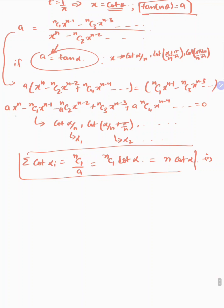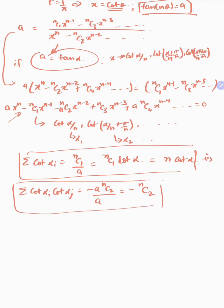One more thing — from the same theory of equations, if I look at the sum of products of pairs: sigma cot(αᵢ)·cot(αⱼ), the sum of products taken two at a time equals c/a, which is minus A·nC2 divided by A, so that will simply be minus nC2. Therefore cot(α/n)·cot(α/n + π/n) + cot(α/n)·cot(α/n + 2π/n) + ... (all pair products, n terms) = minus nC2.